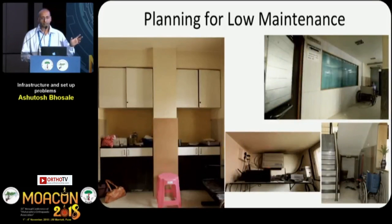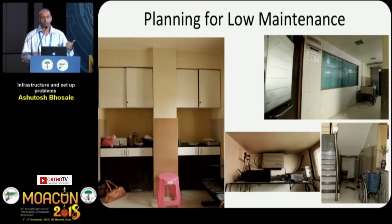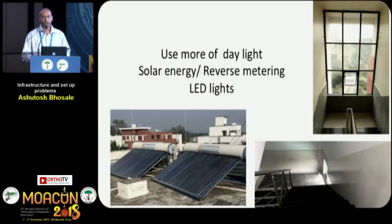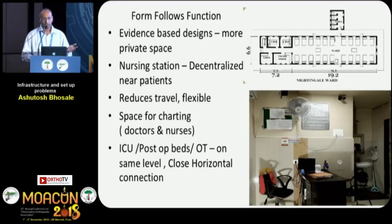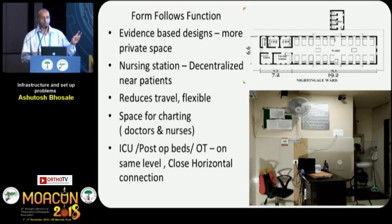Plan your pillars to maximize usable space. Make space for IT gadgets and use the space below the staircase. Use easily maintainable, durable materials, maximize daylight with big window panes, and use solar energy with reverse metering or LED lights. Evidence now suggests you should have more space and decentralized nursing stations — earlier we had long Nightingale wards with nursing stations at one corner, but they should be decentralized to reduce travel and allow flexible charting space. ICU and OT should be on the same level with a horizontal connection.